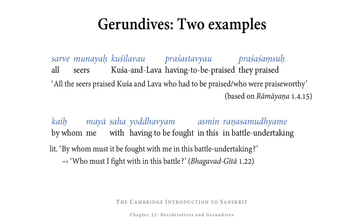The second example comes from the Bhagavad Gītā: kaiś ca māyā saha yodhavyam asmin raṇasamudyame. Kaiḥ means by whom; māyā saha means with me; yodhavyam means having to be fought; asmin raṇasamudyame means in this battle undertaking. Literally: by whom must it be fought, with me, in this battle undertaking. But in English it is much better to express this as an active: who must I fight with in this battle?